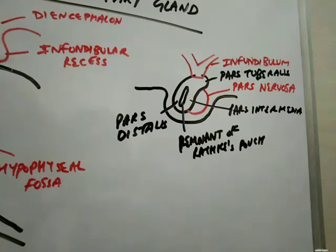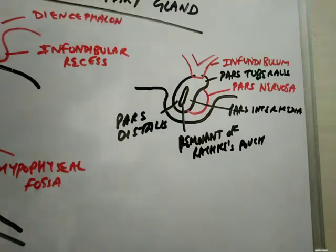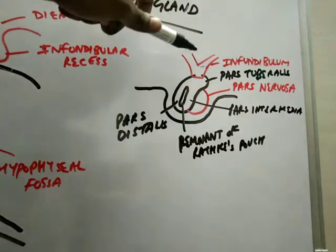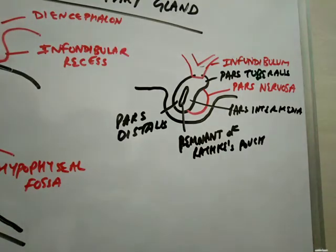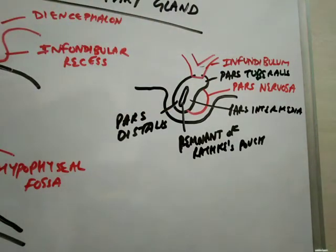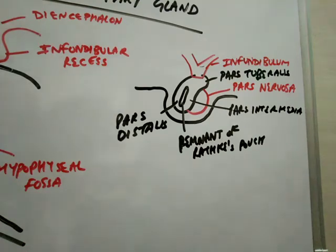The cells of the infundibular recess also proliferate and solidify. The infundibular recess gives two derivatives: first is the pars nervosa, also called the neurohypophysis, and second is the infundibulum — both develop from the infundibular recess.